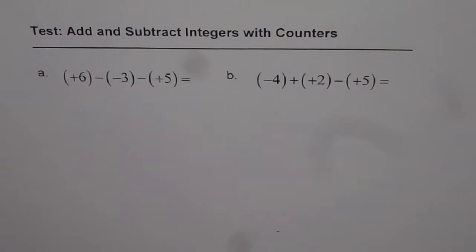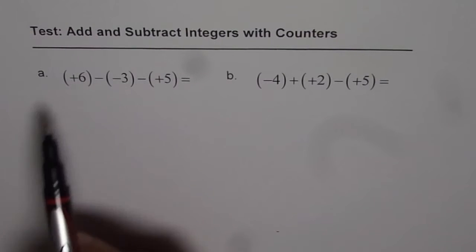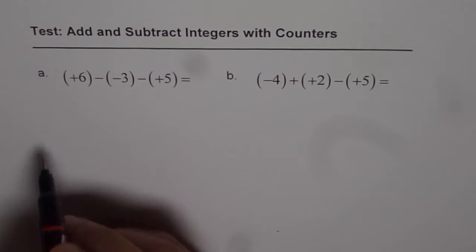Let me take an opportunity to describe another method of doing the same with counters. Now in these questions, what we have is that we have to take away some quantities from a given quantity. So let us say we have two buckets.